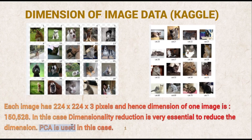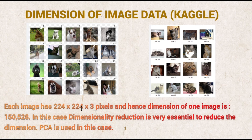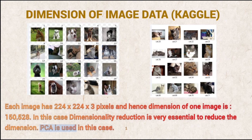Principal component analysis is very much essential when we have an image dataset. This slide shows sample images from a Kaggle image dataset used for classifying cats versus dogs. The size of each image is 224 x 224 pixels and it's a color image, so the dimension of each image is 224 x 224 x 3, which equals 150,528. Since each image is very large and the dataset has hundreds of images, it requires huge storage space. In order to reduce storage space and training time, it is essential to use a dimensionality reduction technique, and PCA can be used here.